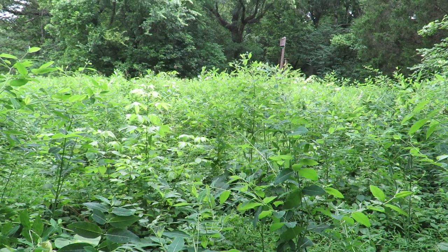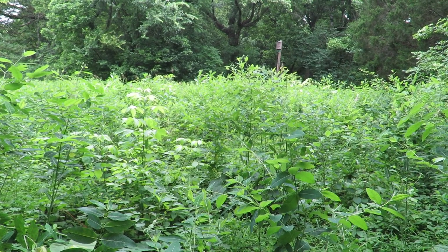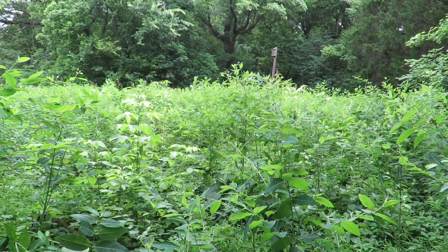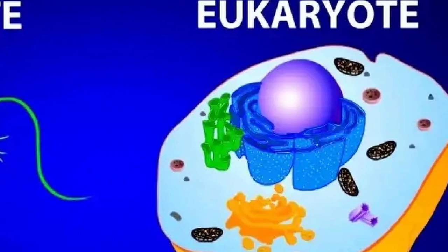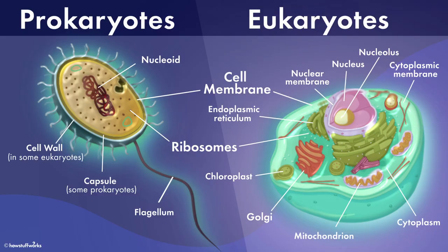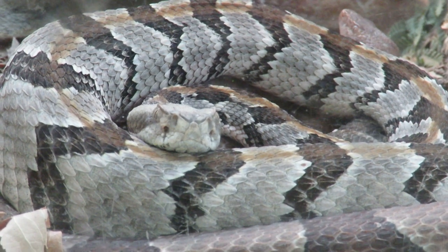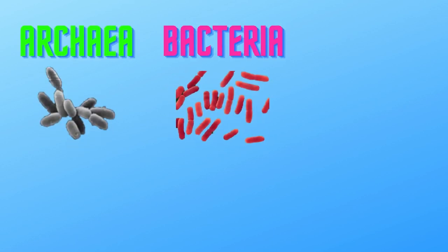Those traits start very broad, like what type of cell does the organism have. Is it prokaryotic or eukaryotic? Basically, does the organism's cells have membrane-bound organelles or not? This broad trait classifies organisms into three domains: archaea, bacteria, and eukarya.